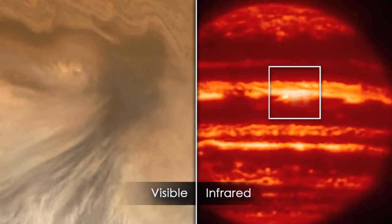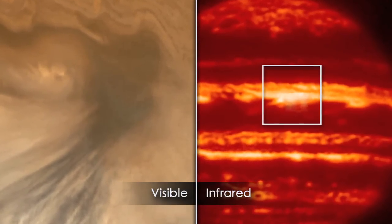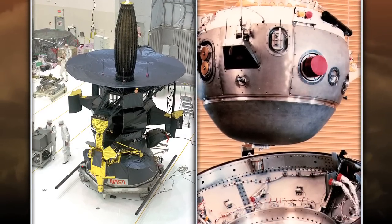So hotspots are like holes in the clouds because they appear very dark when observed in visible light, but in the infrared light they appear very bright. This indicates that we're seeing deeper down into warmer layers of the atmosphere.